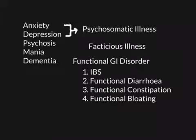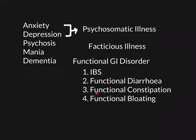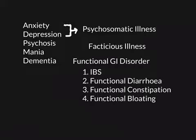Functional constipation is the opposite — stools that are far too well formed. Both functional diarrhoea and functional constipation are issues with gut motility. In functional diarrhoea, the gut is moving contents through too fast, not absorbing enough water. In functional constipation, the gut is moving far too little. The psychosomatic hypothesis is that an underlying psychiatric condition is causing this gut misfunctioning. If you ask patients to keep a symptom diary alongside their mental state, you might find a correlation — their diarrhoea or constipation is worse on days their mental health is worse.